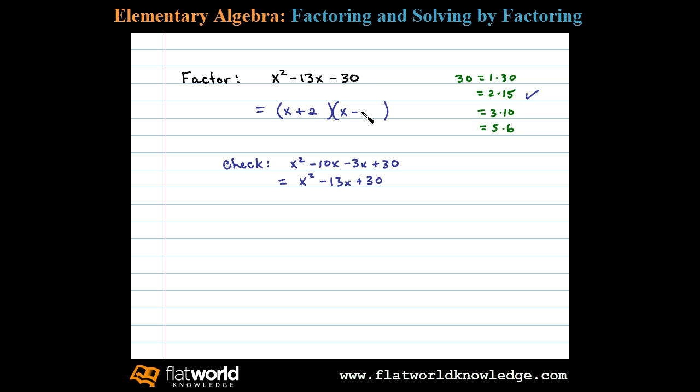Now let's check that. Here we have x times x, which is x². x times negative 15 is -15x. 2 times x is +2x. And then 2 times negative 15 leaves us with -30.